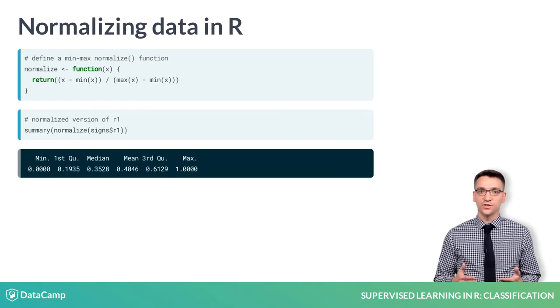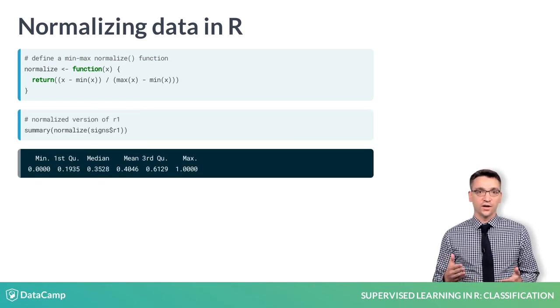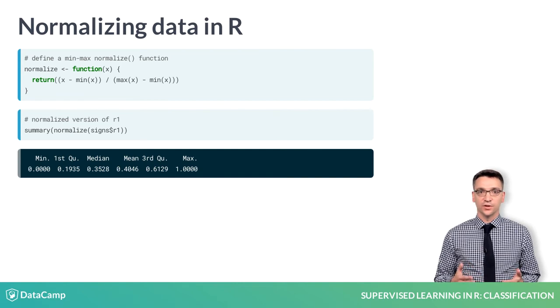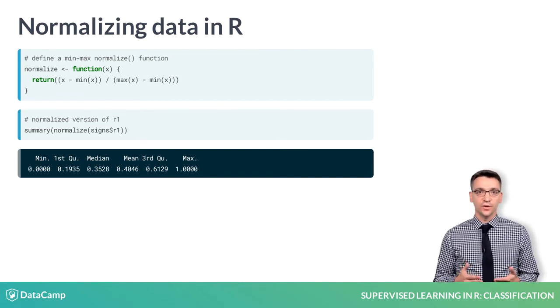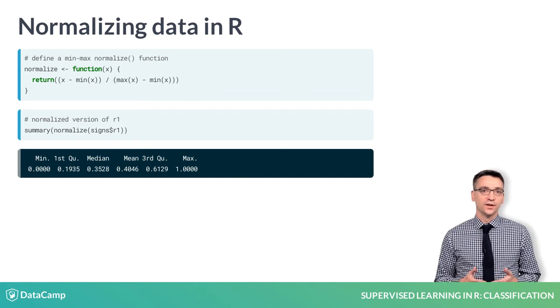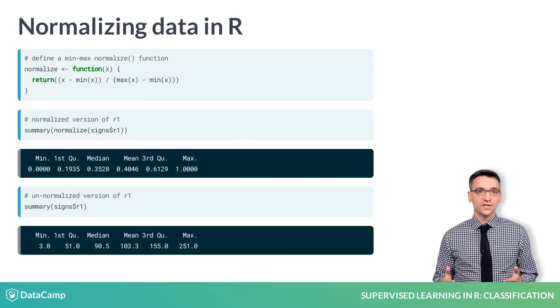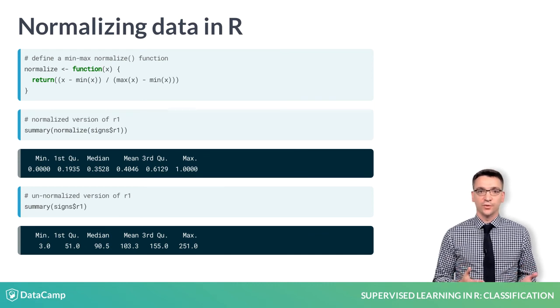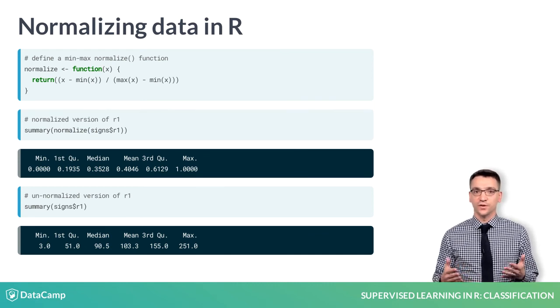After applying this function to R1, one of the color vectors, we can use the summary function to see that the new minimum and maximum values are zero and one respectively. Calculating the same summary statistics for the un-normalized data shows a minimum of three and a maximum of 251.